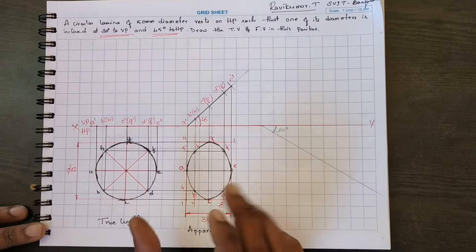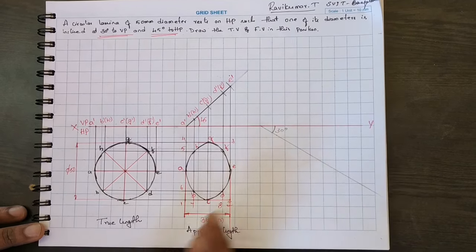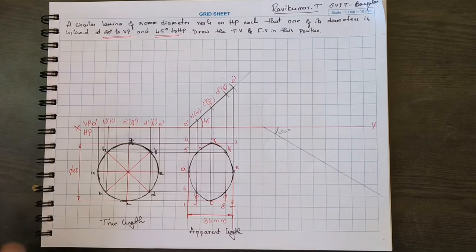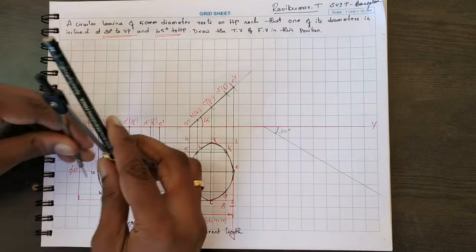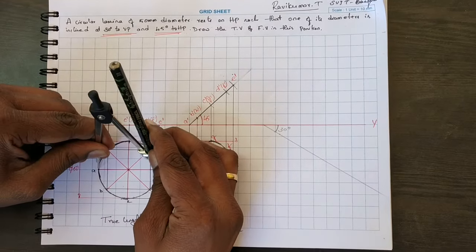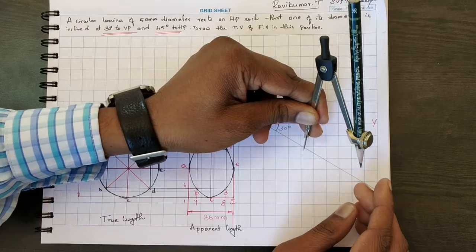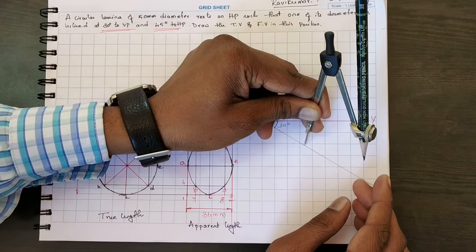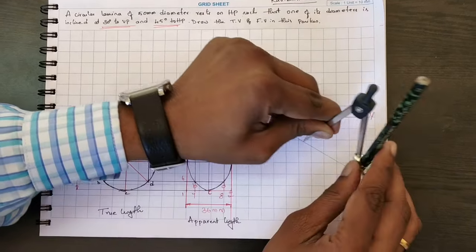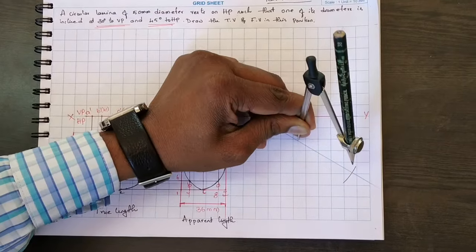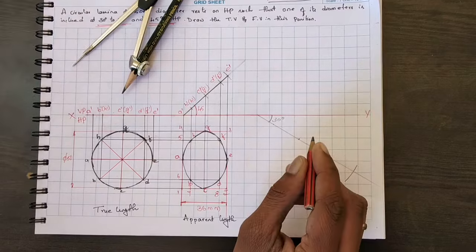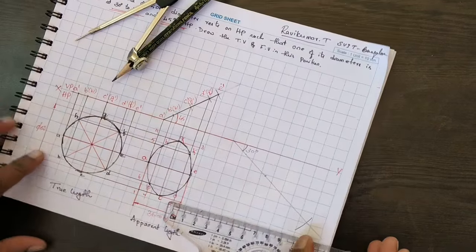To find the beta angle, you require the true length and the apparent length. We'll construct that now. First, take the true length from A to E. Take one resting from any one point and cut it out. Then draw one locus line.